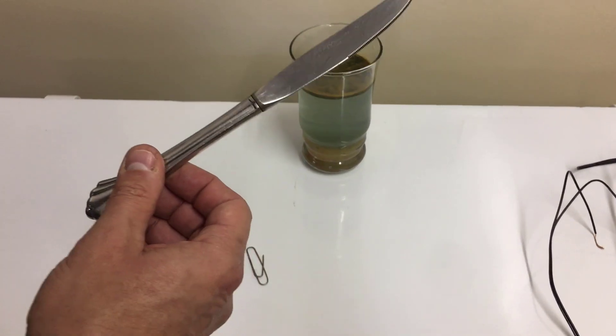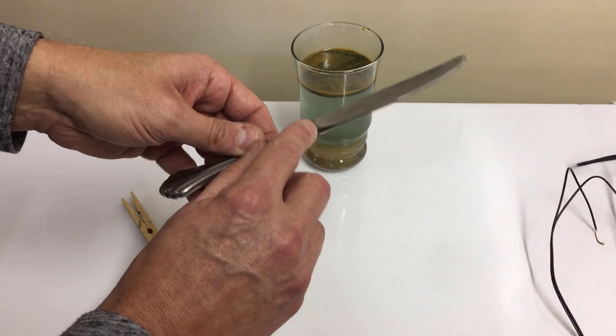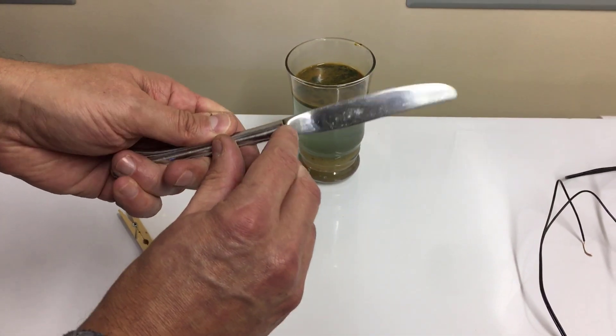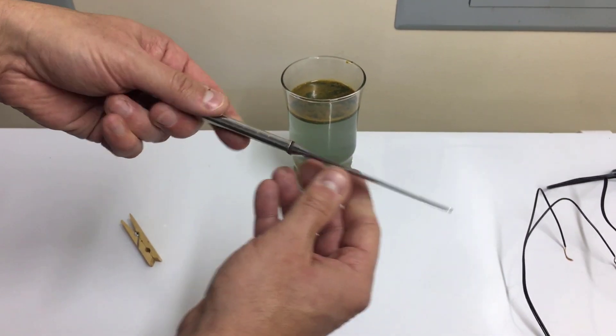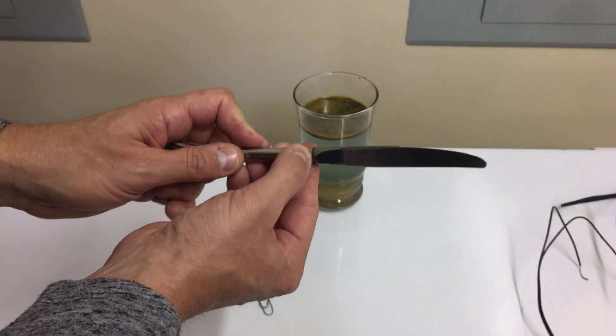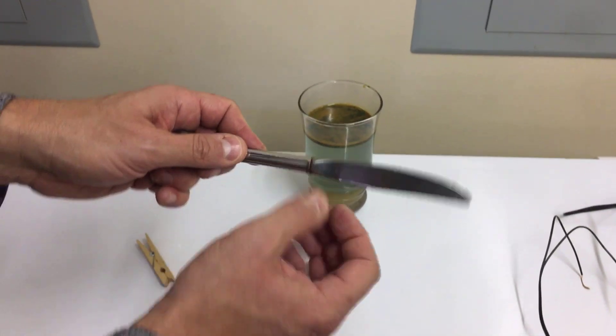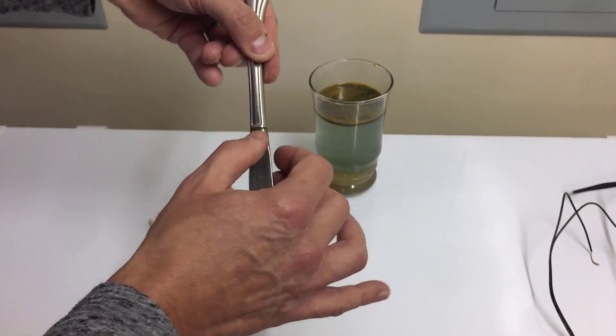And then this is the knife. And as you look at this, you can see right here, it kind of etched it at the top. It didn't really do a whole lot to the knife here that I can see. But it definitely etched it at the top, right there, where the water mark was on it right there.